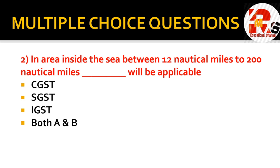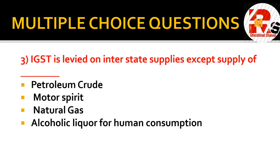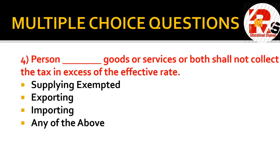Next question: IGST is levied on interstate supplies except supply of petroleum crude oil, petroleum crude, motor spirit, natural gas. The right option for this question is alcoholic liquor for human consumption — that is the exception from IGST on interstate supplies.